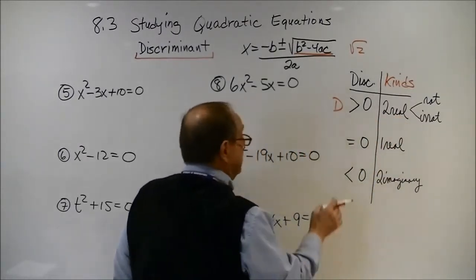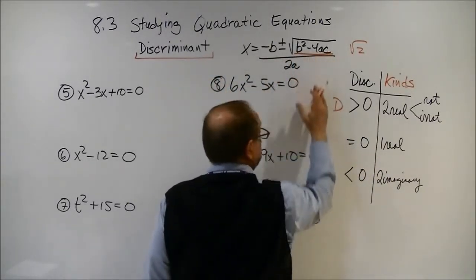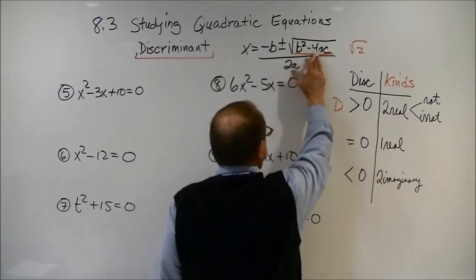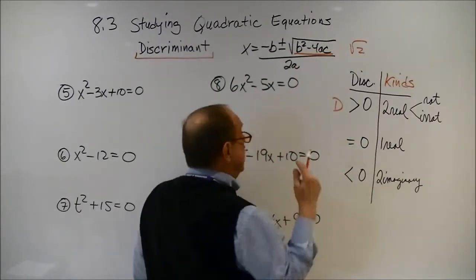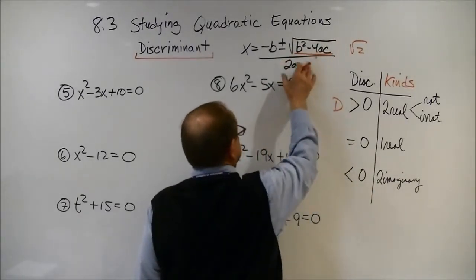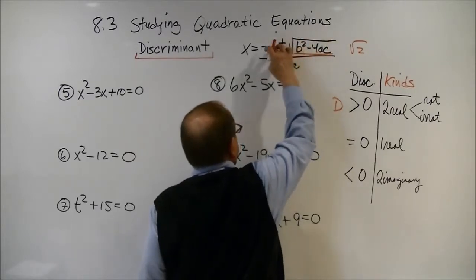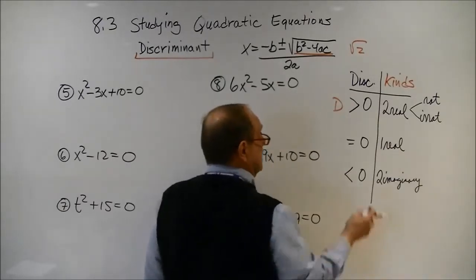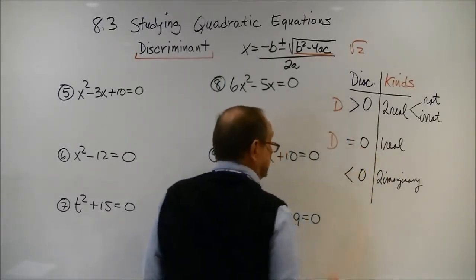Now, if your discriminant, the radicand here, equals zero, then it's going to be plus or minus zero. You're only going to get one answer out of this, because you're not going to have two choices. This is zero, so it's just negative b over 2a. That is your answer. You get one answer if your discriminant equals zero.